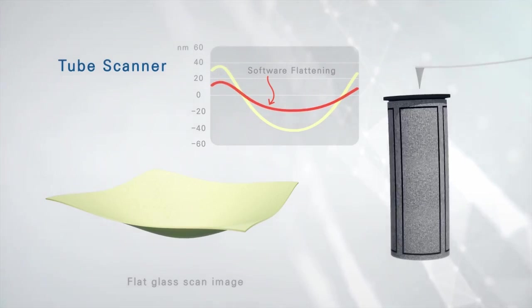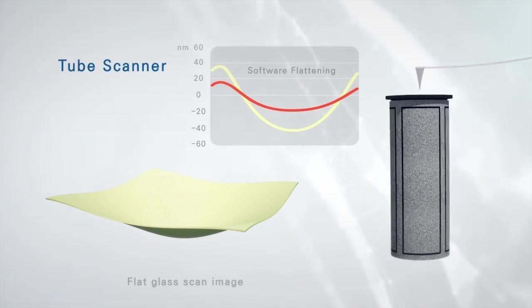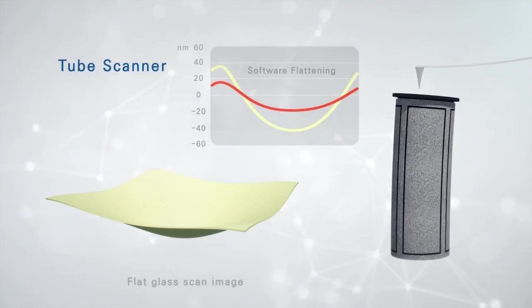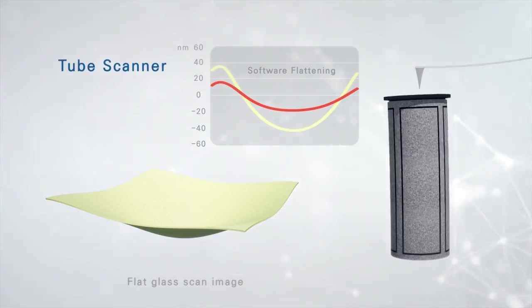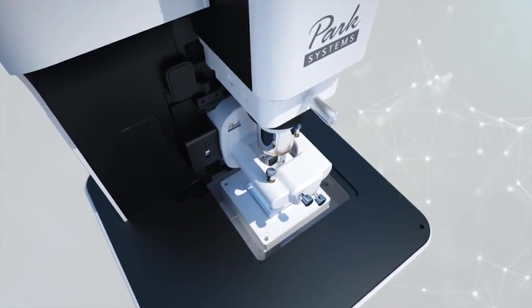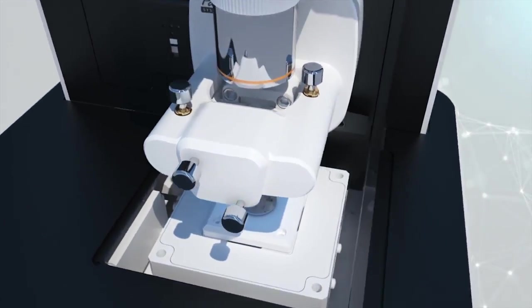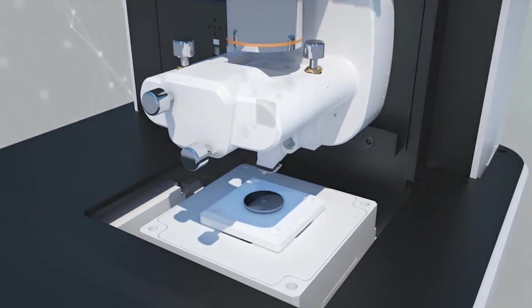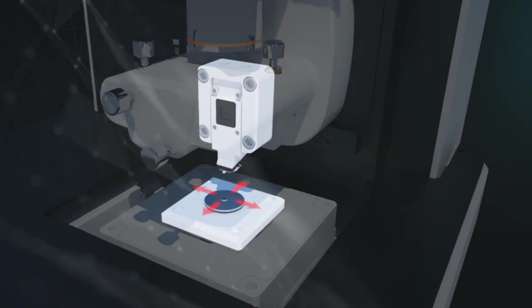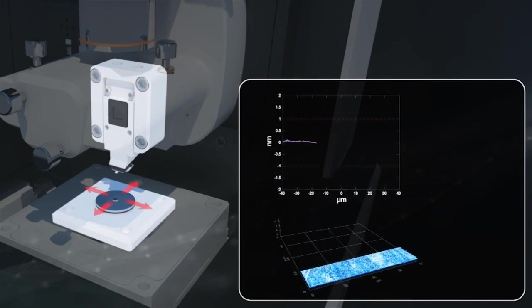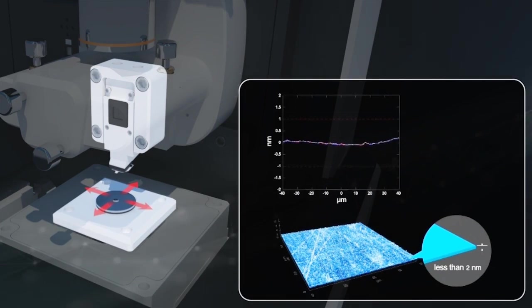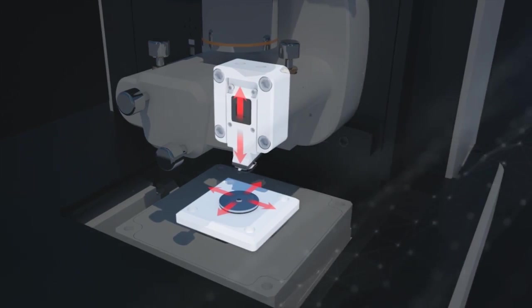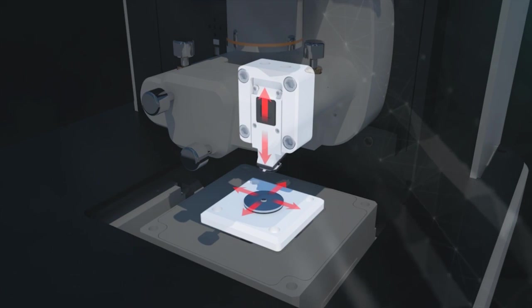In contrast, the decoupled scanner design developed by Park Systems consists of flexure-based independent XY and Z scanners so that measured images can be free of distortion and excellent in linearity and orthogonality, regardless of scanning range or sample size and at any scan location or speed.